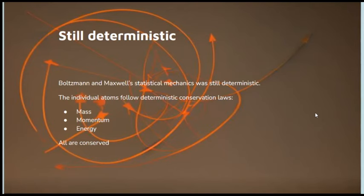Now, as I said, Boltzmann's statistical mechanics is still deterministic. The individual atoms follow deterministic conservation laws. They conserve mass, momentum and energy. All of these are conserved in all interactions. And what he was able to do was to leverage probability theory to show that even if you start off with symmetrical, time symmetrical laws of mechanics, you can end up with a tendency for entropy to increase and things to have a direction of time.